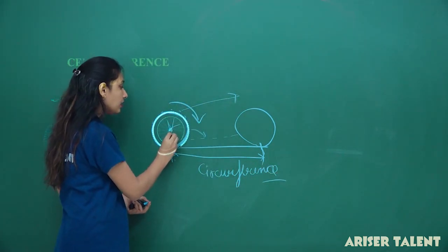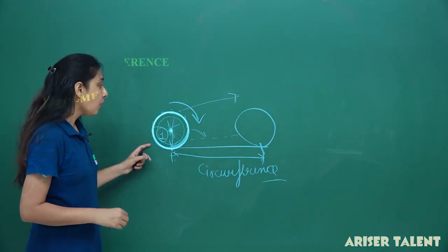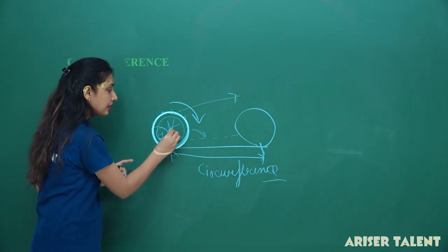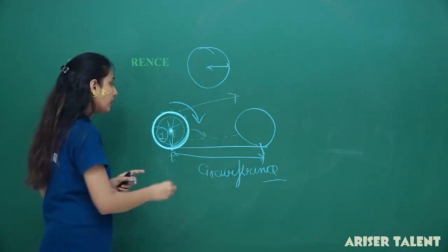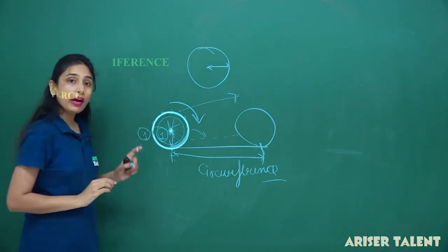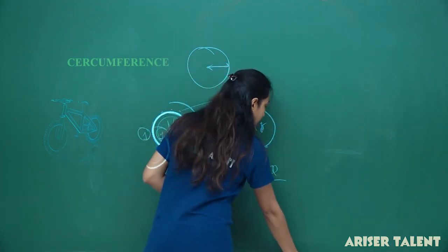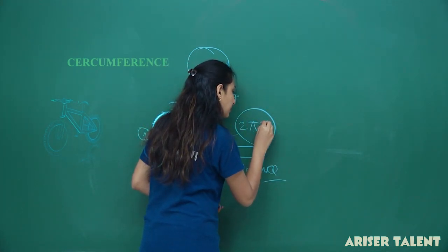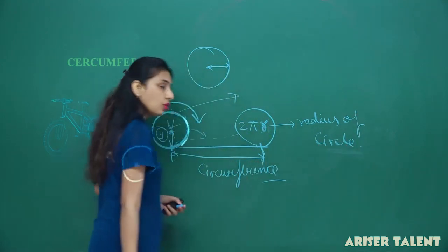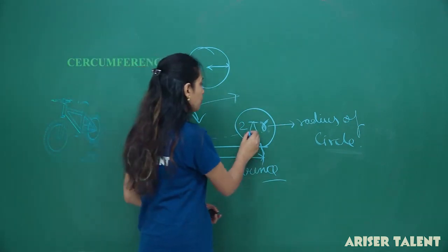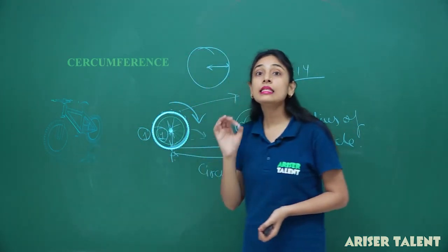If you take a circle with radius r — that means the distance from the center to the circumference — we find out that this particular distance is equal to 2πr, where r is the radius of the circle. You know the value of pi is 3.14. So this is about the circumference of circle.